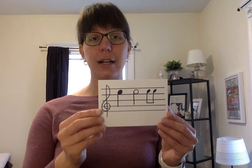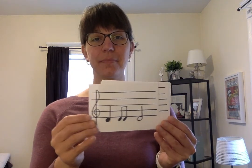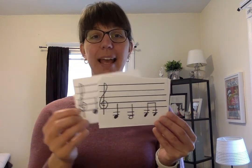So, to review: the staff has five lines and four spaces. The open strings on the violin are E, A, D, and G.